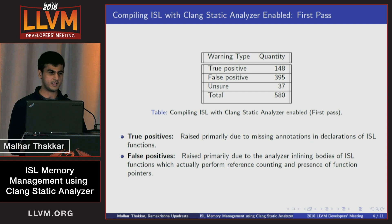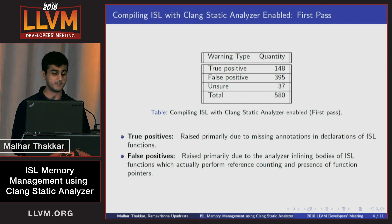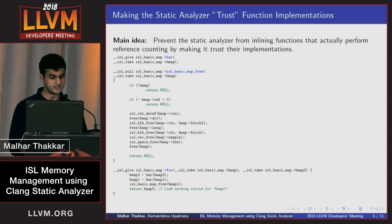We compiled the ISL code base with the retain count checker, which performs reference counting. Overall, 580 warnings were raised, categorized as mentioned on the slides. The true positives were primarily raised because certain functions in ISL were missing memory annotations — those were fixed early on. The false positives were raised because the Clang static analyzer was inlining certain functions of ISL that were actually performing reference counting and did not trust them.